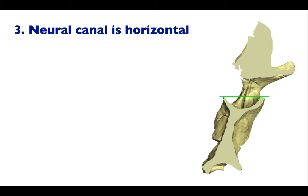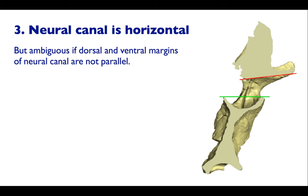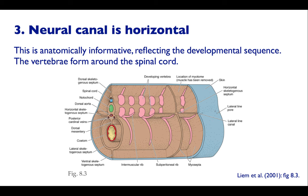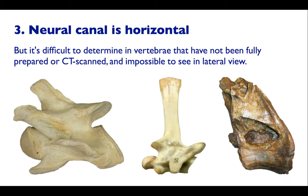Let's look at a third possibility: make the neural canal horizontal. Here we can see a line bridged across the base of the canal, and this gives very different results from method two — these vertebrae are 20 or 30 degrees out from each other. Matt Wedel has used a low-tech leveling device, a roll of paper shoved through the neural canal, to show that this is close to horizontal in one case, though it needs to be rotated a few degrees. This approach is also anatomically informative because it reflects the developmental sequence of the vertebra — vertebrae form around the spinal cord, and although the spinal cord curves, it never kinks. So using this interpretation gives something that more closely approximates the way animals actually work.